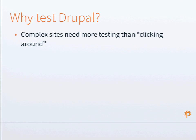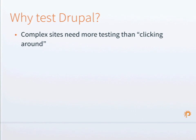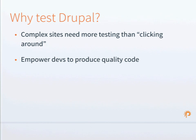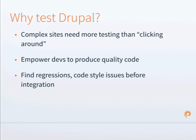So why test Drupal? Complex sites need a lot more testing, something more rigorous than just clicking around on a website. You can't find all the regression issues by randomly testing. It's good to have a script, and even better to have it automated so it doesn't take human time to verify your site is still working as expected. Having tools that help with testing or code quality checks empowers developers to build higher quality code. It also allows you to find regressions or code style issues before you've committed your code. It's easier to fix problems when they're still in the hands of the original developer.